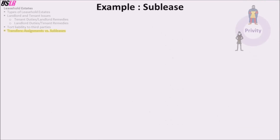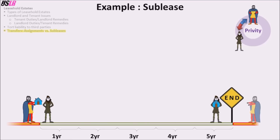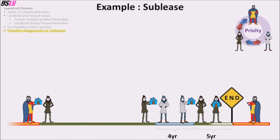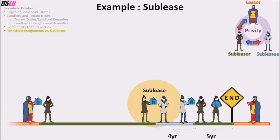In a sublease example, a landlord leases property to a tenant for a term of five years. At the end of the third year, the tenant leases the property to a new tenant for one year — this is a sublease. The lessor and the sublessee are not in privity of contract and not in privity of estate: they have not contracted with each other and their interests are not successive. However, the lessor and the sublessor are in both privity of contract and privity of estate — they contracted in the original lease and their interests are successive because the sublessor takes back the property from the sublessee before the lessor ultimately takes back the property. The sublessor and the sublessee are also in both privity of contract and privity of estate — they contracted for the sublease and the sublessor eventually takes back the property from the sublessee.